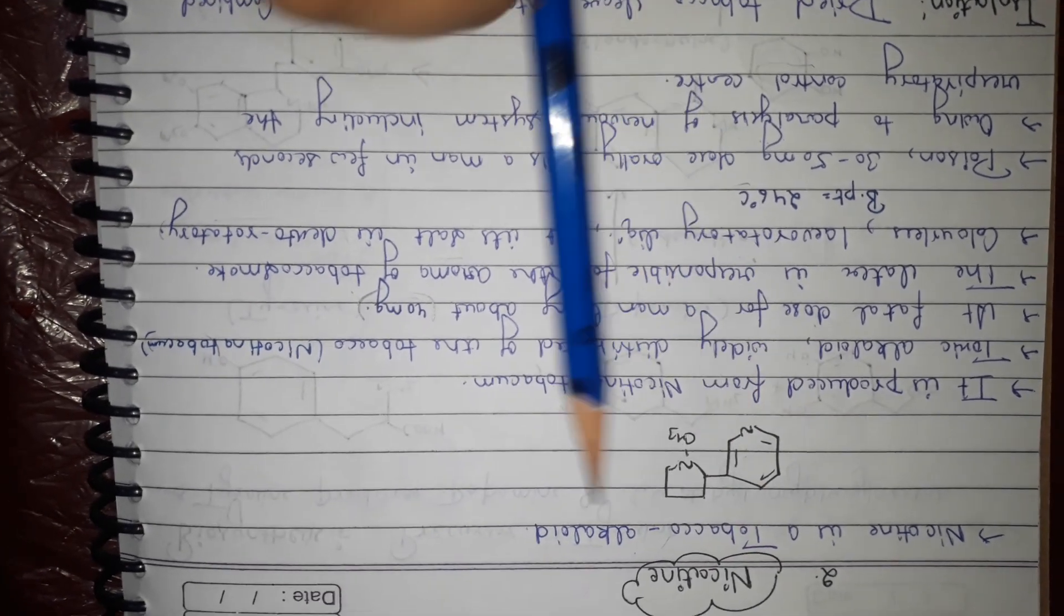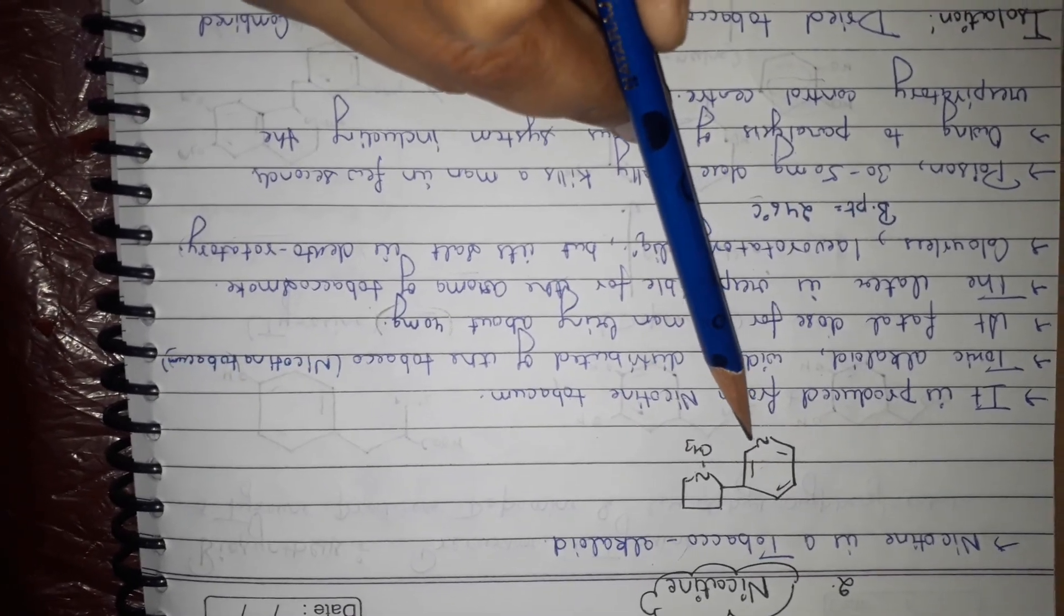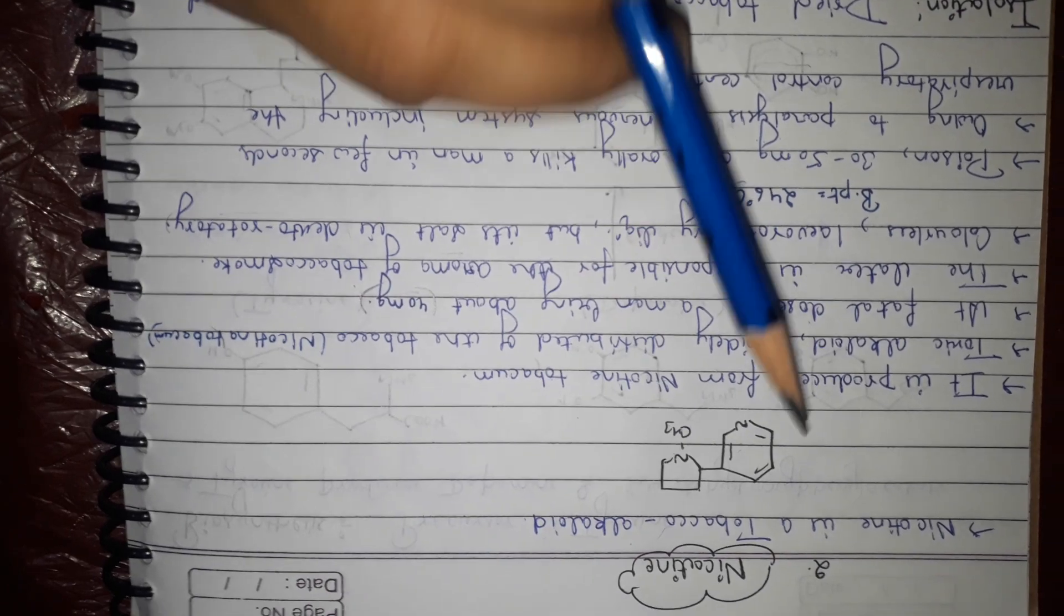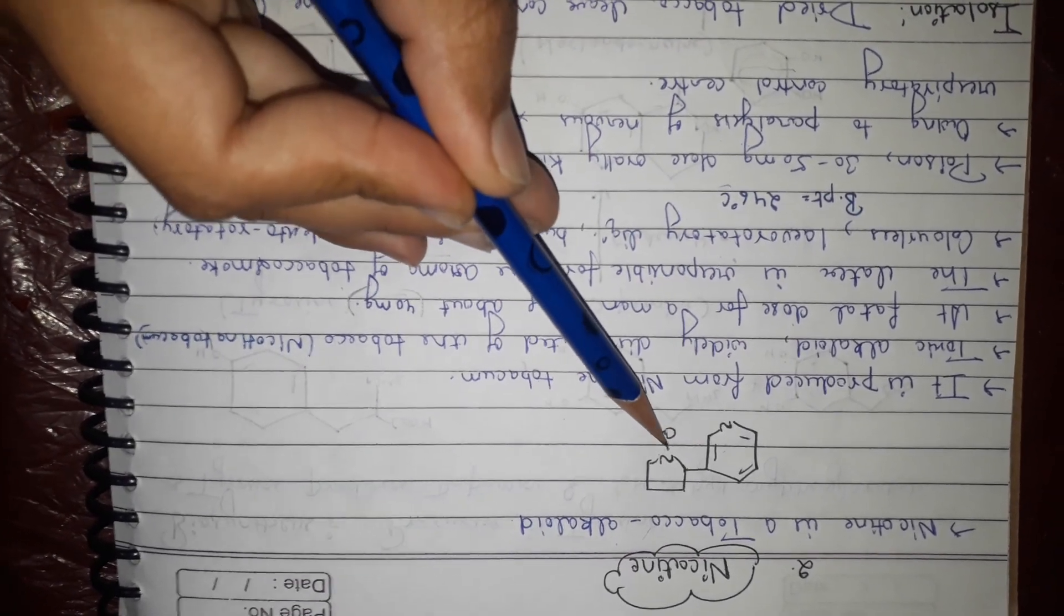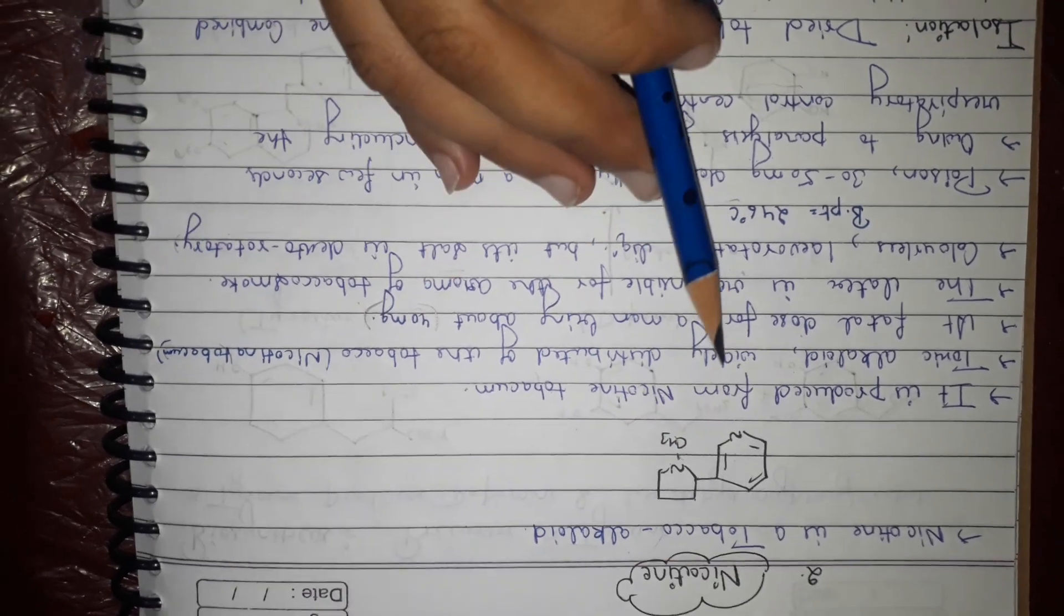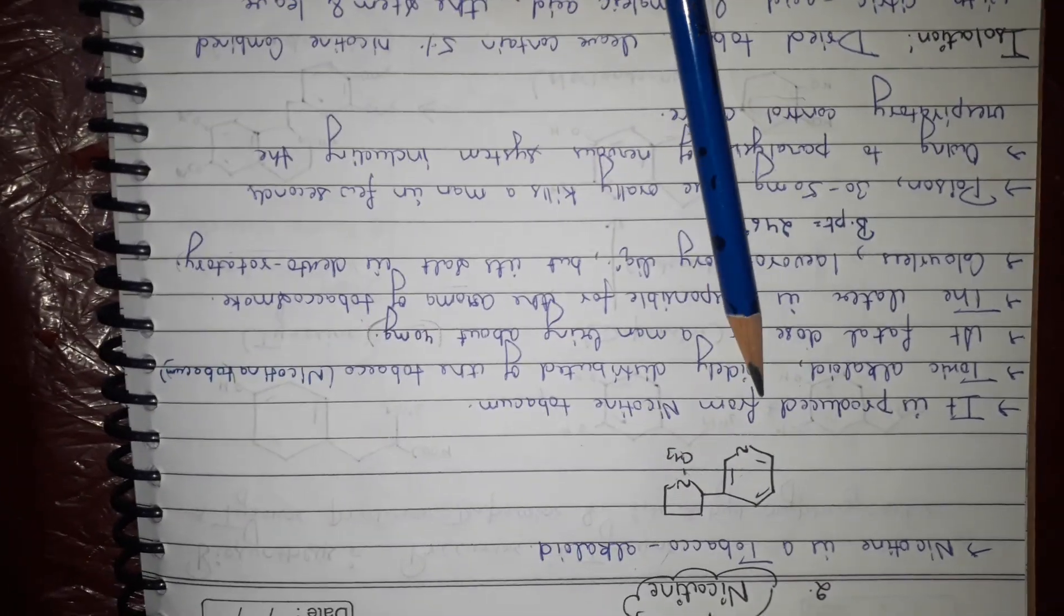We have to study the constitution - the presence of two nitrogen atoms, which one is pyridine type, which one is pyrrole type, and the methyl group regions. It is produced from nicotine tobacco as I told you.